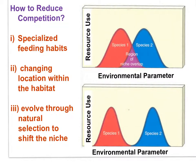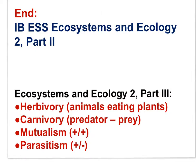Competition has the potential to reduce the success of a species in its habitat. Thus, mechanisms to reduce competition — to reduce niche overlap — would benefit species over evolutionary time. Reduced competition can occur through specialized feeding habits, changing location within the habitat, or evolving through natural selection to shift the niche. We will study the mechanism of natural selection later in this course. That brings us to the end of IBESS Ecosystems and Ecology 2, Part 2. Moving on to Part 3, we will look at herbivory, predator-prey, and symbiotic interactions.